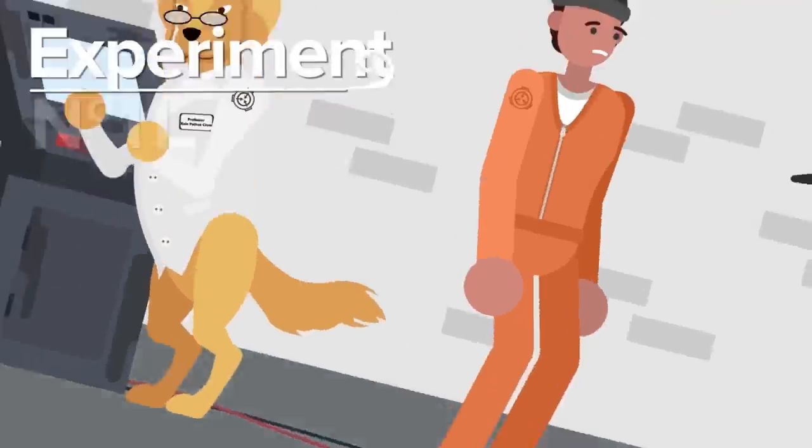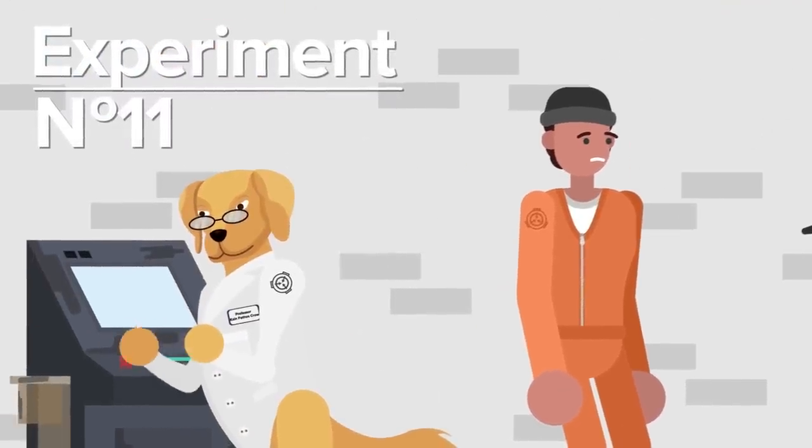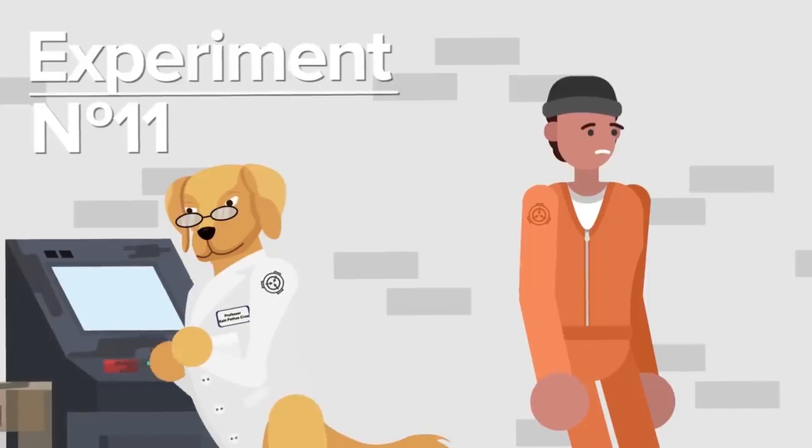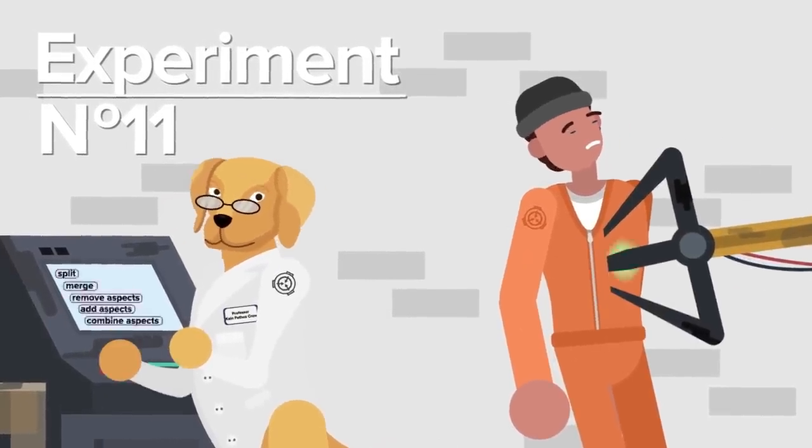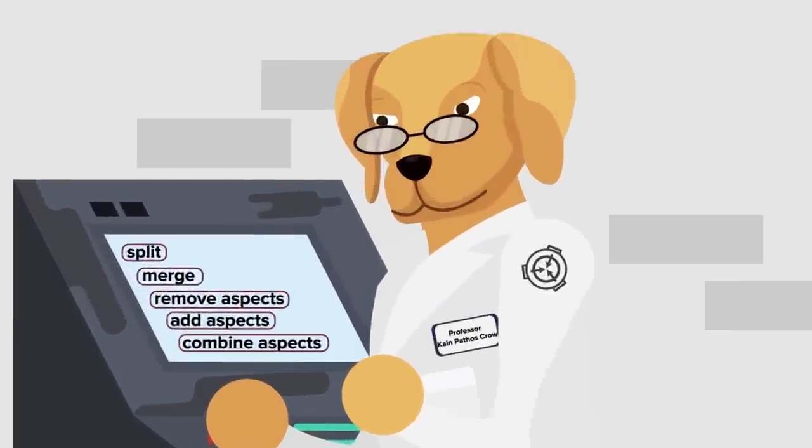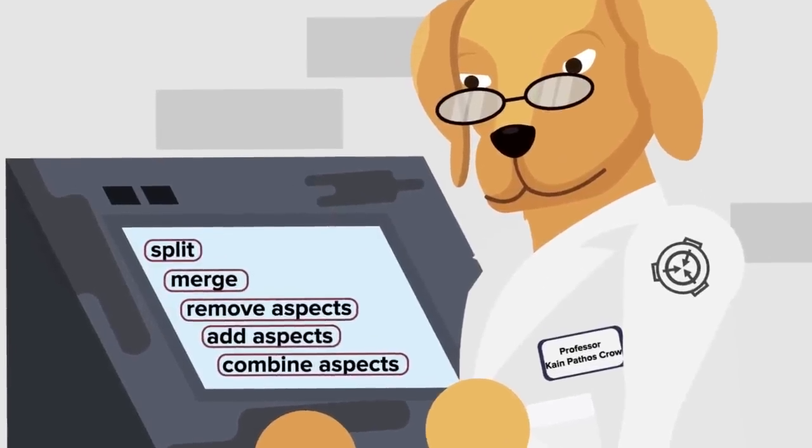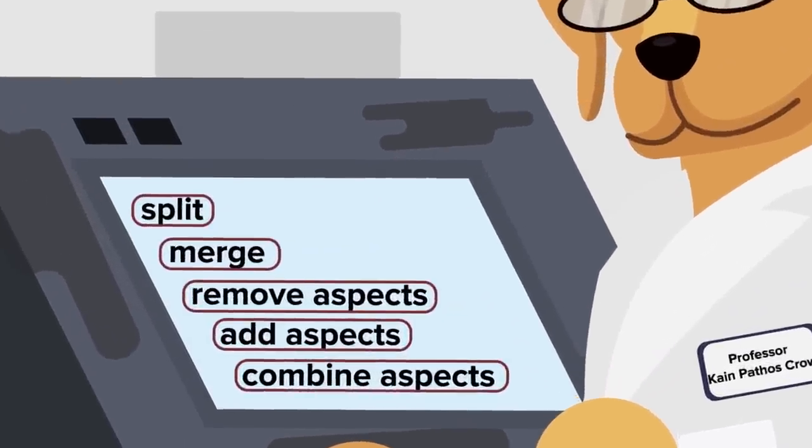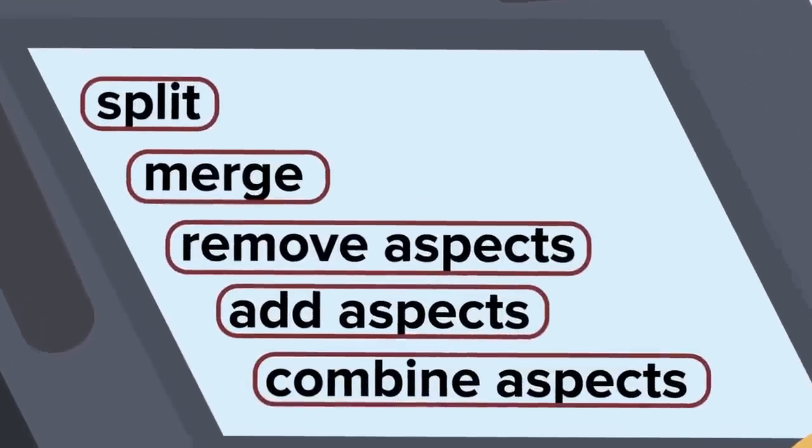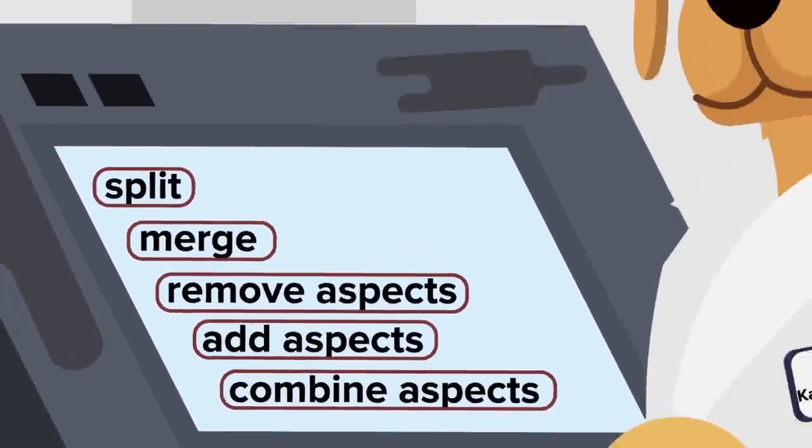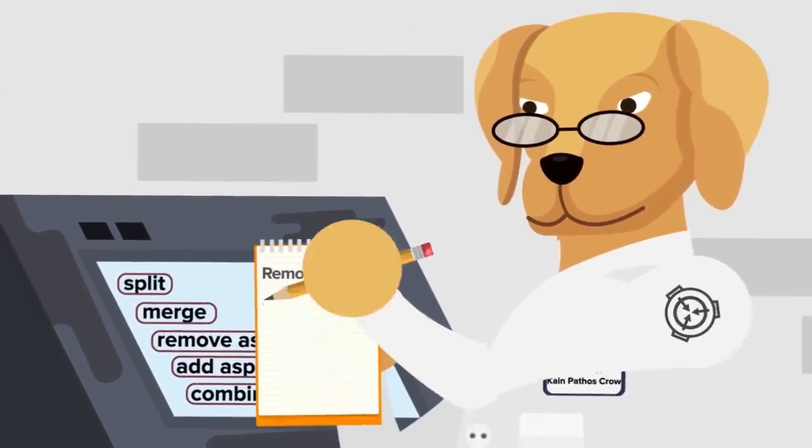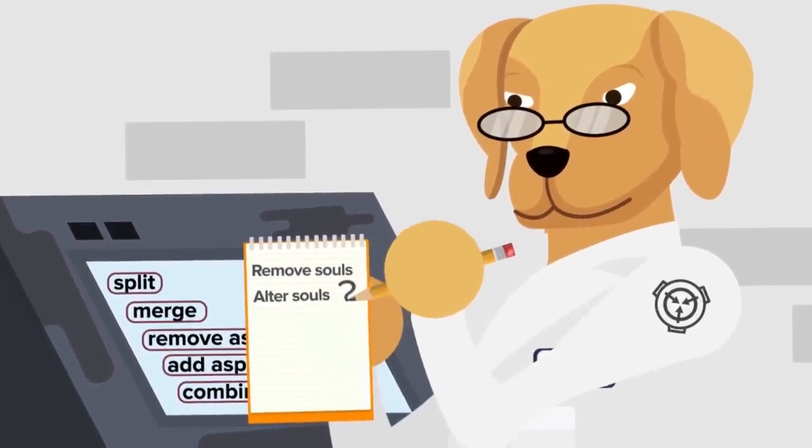Then, on Experiment Number Eleven, Crowe seemed to crack that little pause SCP-158 took during each operation. A new list of commands appeared on the monitor, like Split, Merge, Remove Aspects, Add Aspects, and Combine Aspects. It seemed to the Professor that the device could be used to not only remove souls, but alter them.